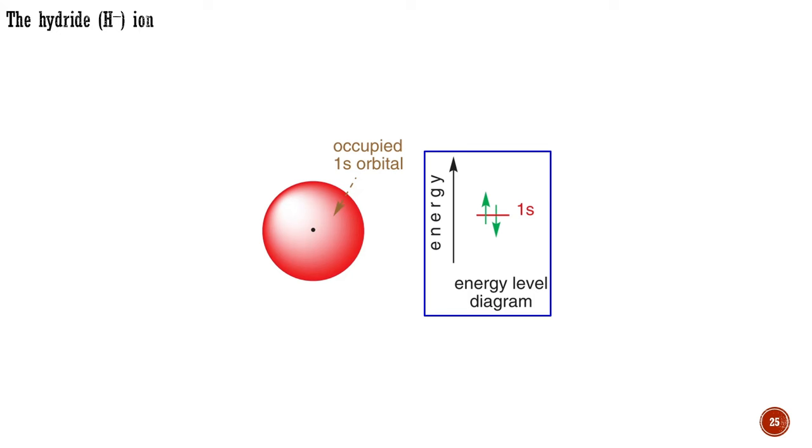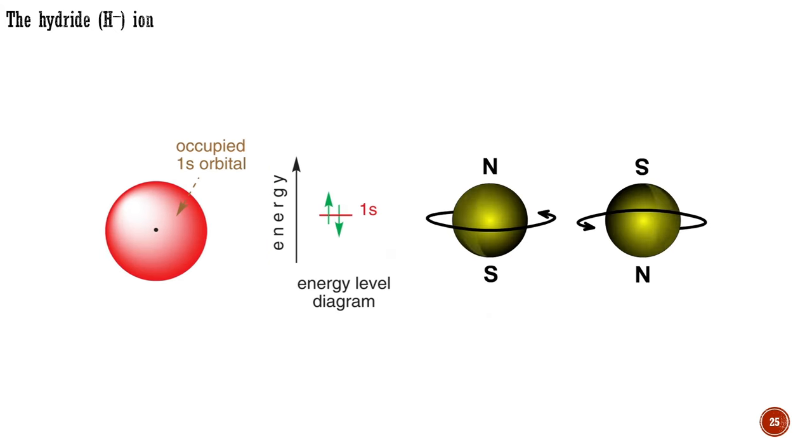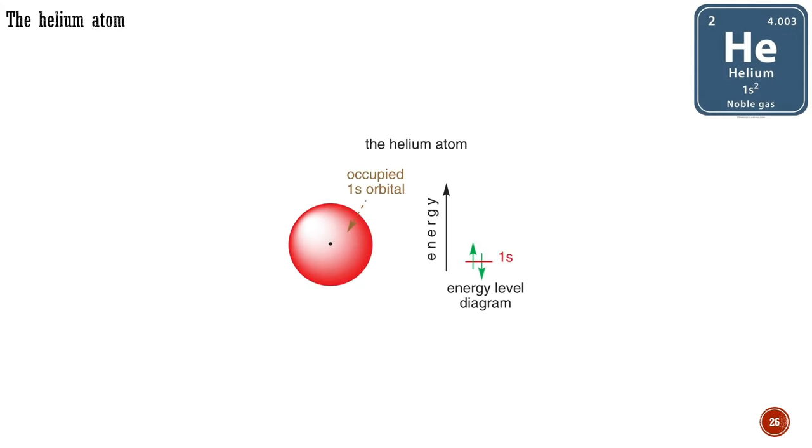You may ask, why do we draw the electrons as arrows? Well, electrons possess a property known as spin, and the two electrons allowed in each orbital must spin in opposite directions. The arrows serve as a reminder of these opposing spins.